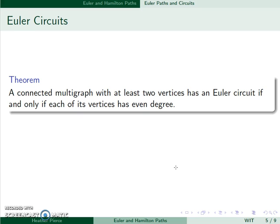In general, a connected multigraph with at least two vertices has an Euler circuit if and only if each of its vertices has an even degree. So we need to check the degrees of vertices, and as long as they're all even, we can find an Euler circuit.